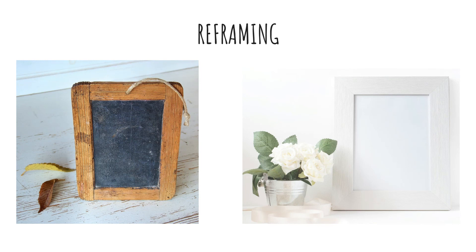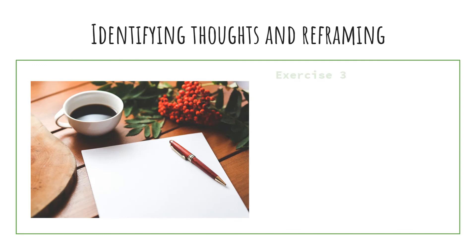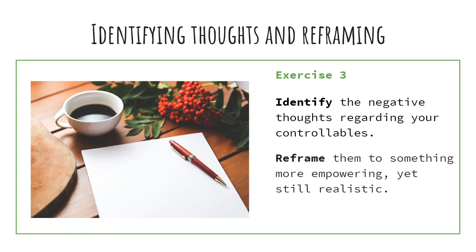We are now at the final stage: challenging your evaluations of stress-provoking situations. Imagine reframing as literally taking a frame with some dysfunctional thought you have about a situation and changing it with a fresh one — suddenly it gets a new look, a new perspective on the thing you find stressful. For example, one thought I had during lockdown was that I'm wasting my precious time sitting at home. I knew that wasn't helping me, so I reframed it to: a great opportunity where I get to do things I haven't had time to do before the pandemic. My reframed thought is just as realistic as the first one but has a bright edge — motivation and positive energy in a realistically stressful situation. Your turn: identify negative thoughts related to your controllables and reframe them into something more empowering while keeping it real. You have two minutes.